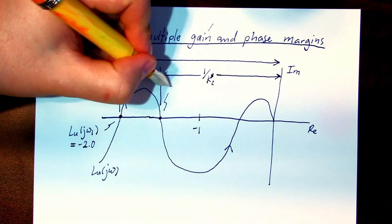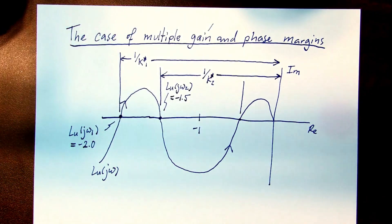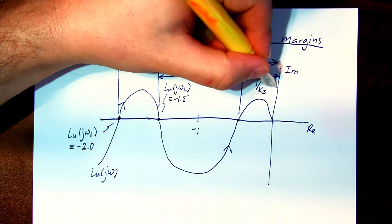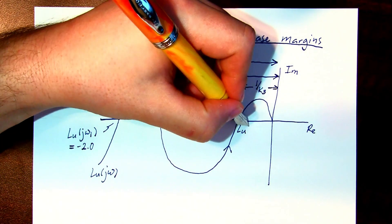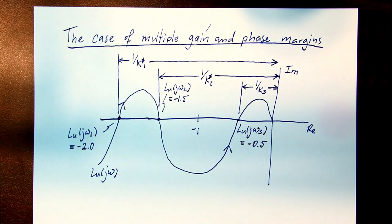At a frequency omega 2, we have a gain margin of k2 star, and a frequency of omega 3, a gain margin of k3, where the loop gain is minus 0.5.